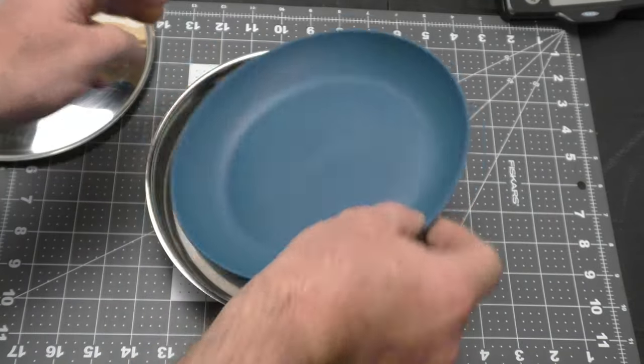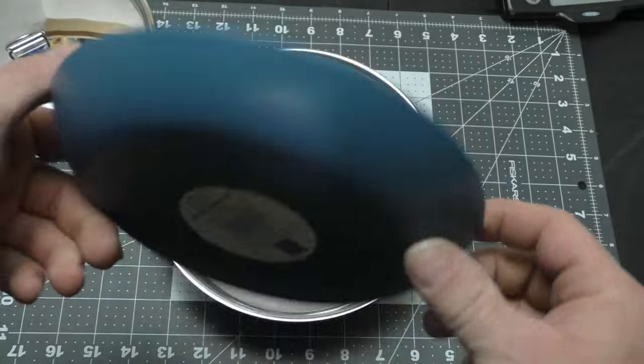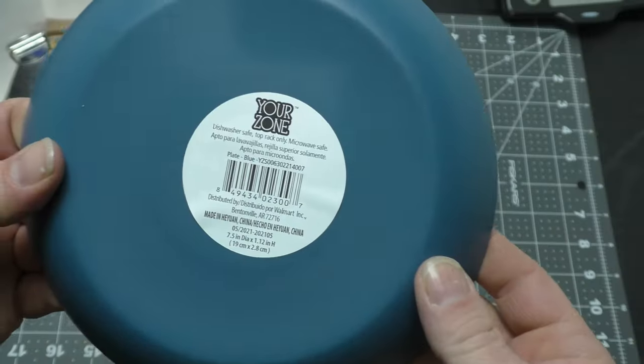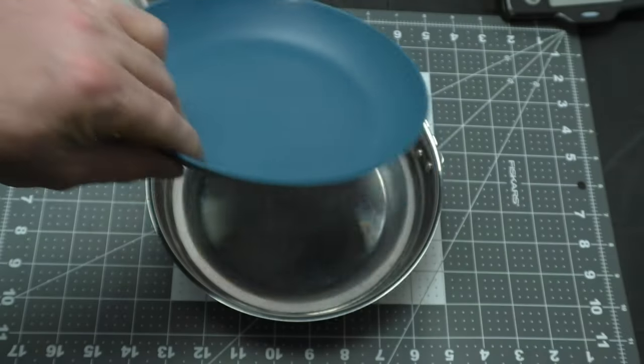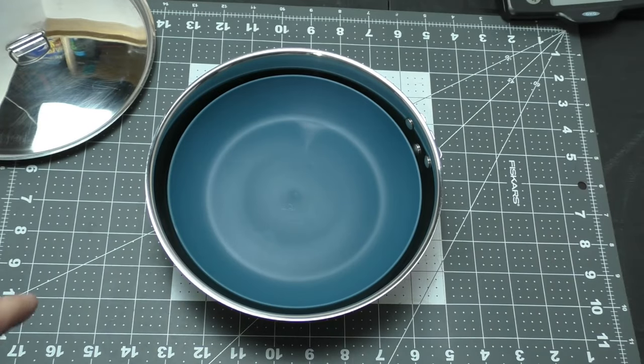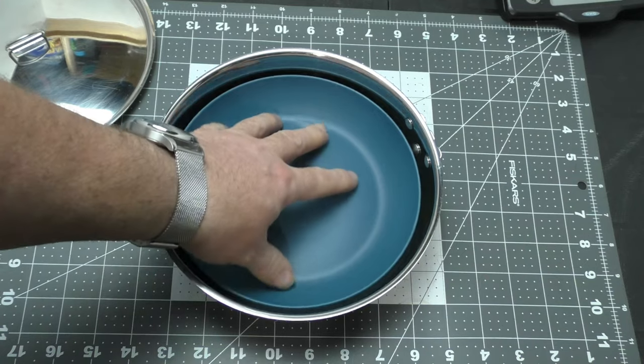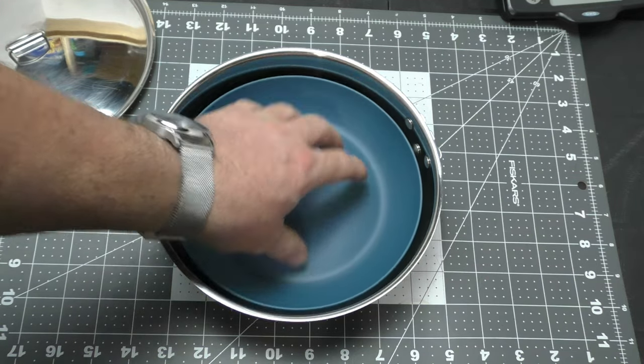So I found this plastic plate. There's a UPC and everything on it. And as you can see, it fits inside the Pathfinder skillet really well.